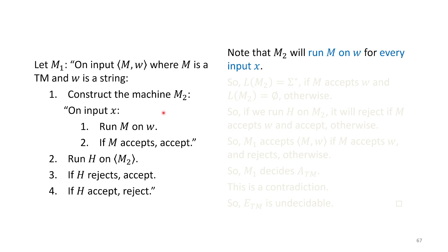Every input to M2 is treated the same — we just run M on W. We don't know if M is going to halt, so there are three outcomes: M accepts, M rejects, or M runs forever. If M runs forever, M2 will run forever too. So M2 is either going to accept every string, run forever, or reject every string. If it accepts every string, its language is all strings. If it doesn't accept every string, its language is empty.